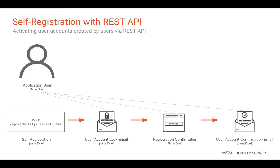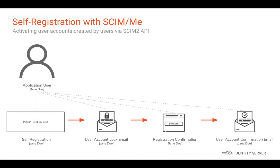WSO2 Identity Server also enables self-user registration via a REST API. In this approach, instead of an administrator, the user will self-register in the system via the REST API, upon which a locked account gets created. The information about this locked account will be emailed to the registered email ID with a confirmation link. Once the user confirms account creation, an account creation confirmation email will be sent to the user's registered email ID. Similarly, you can self-register using the SCIM /me endpoint.